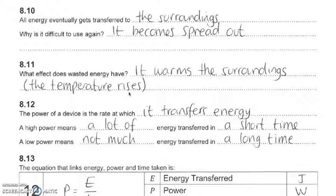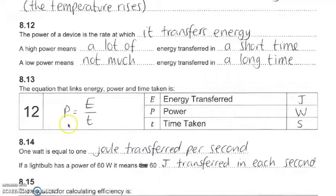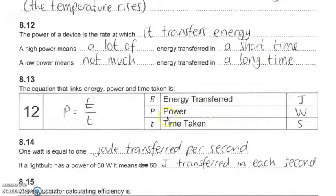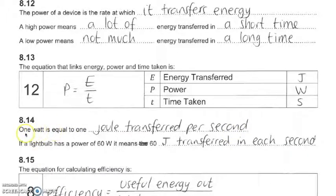Now let's talk about power. Power is the rate of energy transfer. A high power device means a lot of energy is transferred in a short time; a low power device means not much energy is transferred over a long time. Energy and work done have units of joules; power has units of watts — one watt equals one joule transferred per second. So if a light bulb has a power of 60 watts, 60 joules is transferred every second.